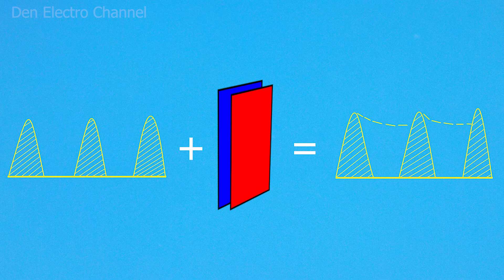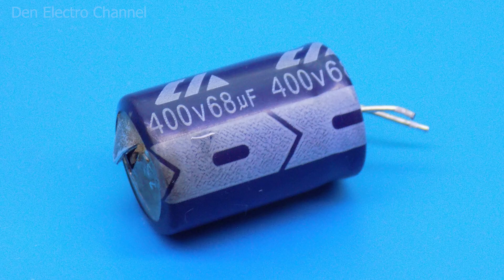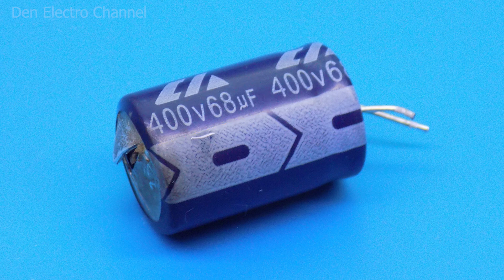A capacitor is an electronic energy storage device that can be used to smooth out ripple voltage. The capacitor has two important parameters: capacitance and voltage. From them, we can understand how much energy a capacitor can accumulate at a given voltage.